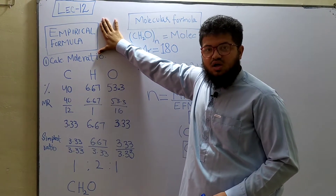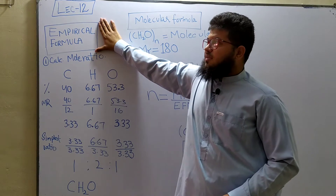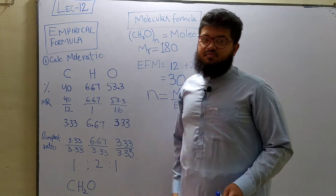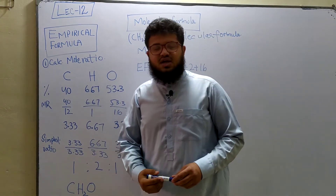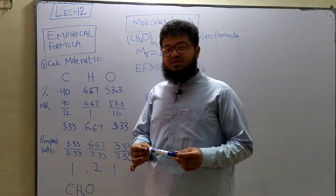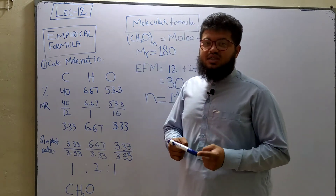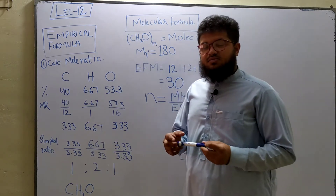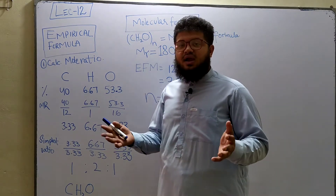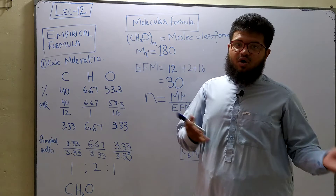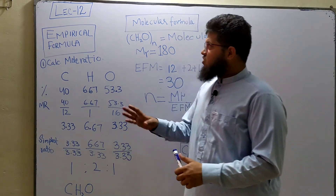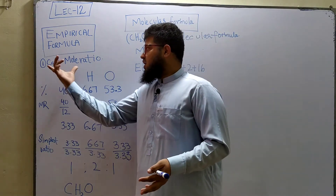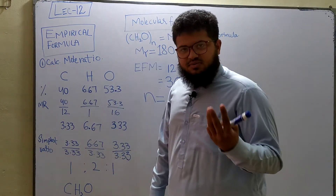First, let's look at the definition of empirical formula. Empirical formula is the simplest formula representing the simplest whole number ratio between the different atoms which are present in the molecule of that particular compound. So the empirical formula is essentially the simplest formula.